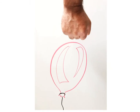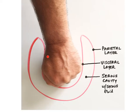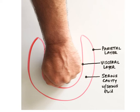A great way to visualize the organization of a serous membrane is to think of a fist pushed into a partially inflated balloon. Imagine the fist as an organ, like the heart, and the balloon as the serous membrane surrounding it. The inner layer of the balloon touching the fist is the visceral layer, and the outer layer of the balloon is the parietal layer. The inner space of the balloon is the serous cavity that holds the serous fluid.